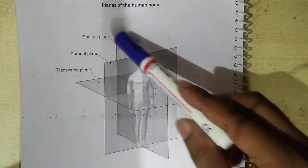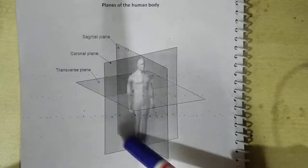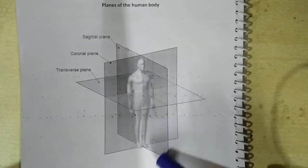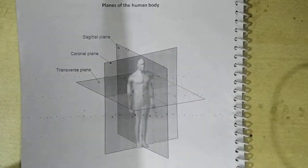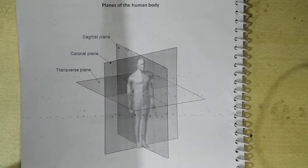I repeat: it is a vertical plane which passes through the middle of the body and divides the body into two equal halves — the right half and the left half.